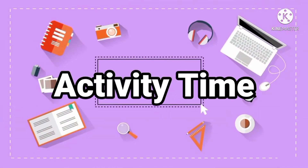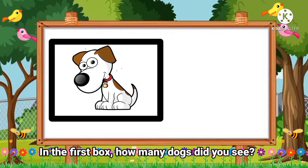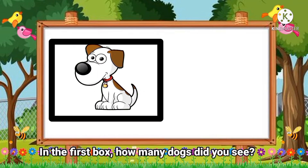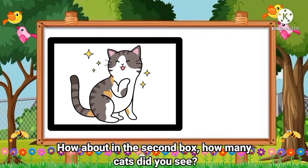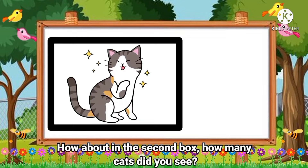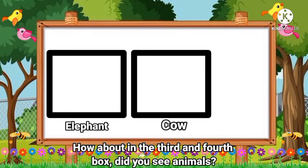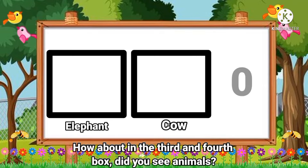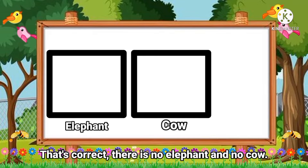It is time! How many animals do you see in each box? In the first box, how many dogs did you see? Good job! How about in the second box, how many cats did you see? Good job! How about in the third and fourth box, did you see animals? That's correct! There is no elephant and no cow. Good job!